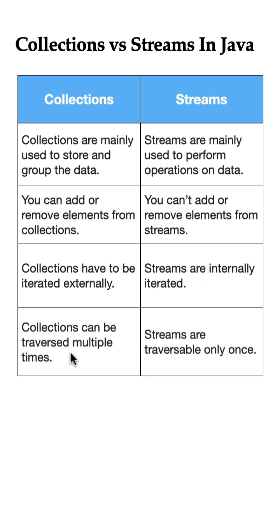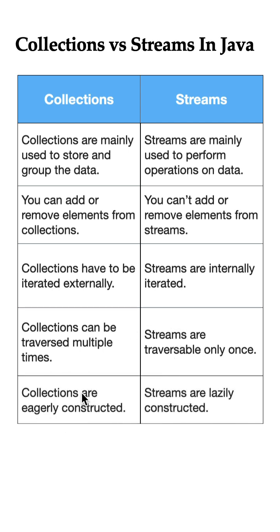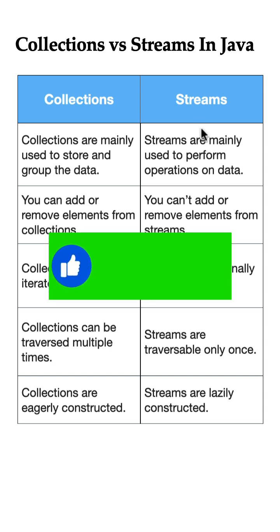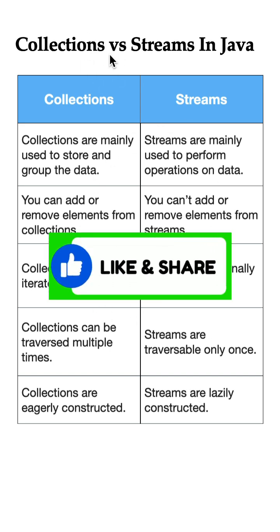Collections can be traversed multiple times, whereas streams are traversable only once. Collections are eagerly constructed — all elements are computed at the beginning — but streams are lazily constructed, meaning internal operations are not evaluated until a terminal operation is invoked. These are the key differences between collections and streams in Java.